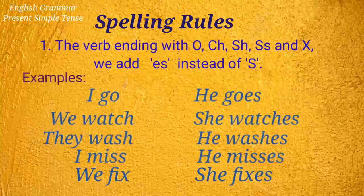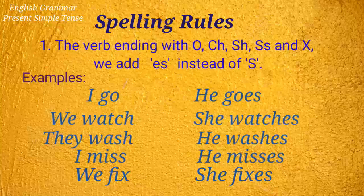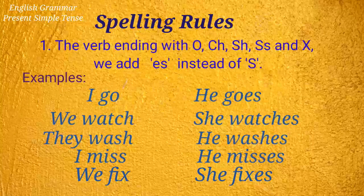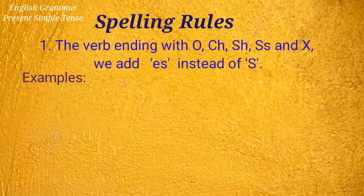Examples of verbs adding 'es': I go but he goes, we watch but she watches, they wash but he washes, I miss but he misses, we fix but she fixes.